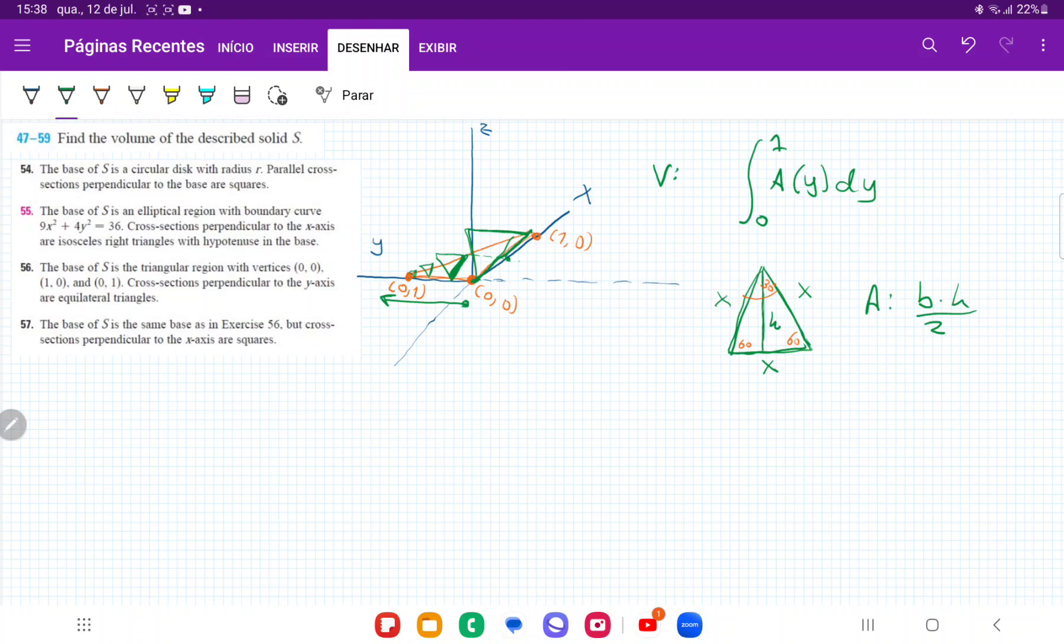So by trigonometry here, we have that cosine of 30 is equal to adjacent, which is h over x. Therefore, we can say that h is equal to x cosine of 30, or h is equal to cosine of 30 is root 3 over 2 times x.